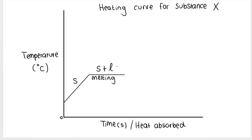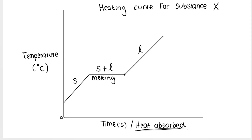After it has melted completely it is in its liquid phase, and the liquid phase of the graph will show an inclined line again — temperature is increasing. Notice that when the substance is in a single state — just a solid, just a liquid, or just a gas — we get an inclined line. At this point we have a colder liquid, and as we continue adding heat, it becomes a warmer liquid and then a hot liquid.